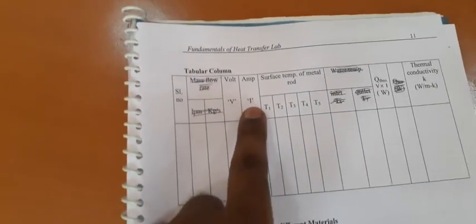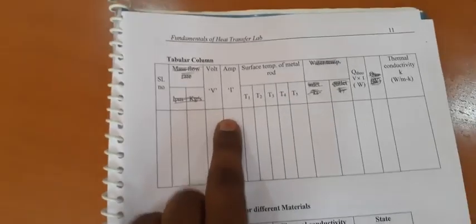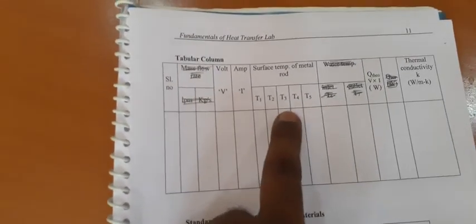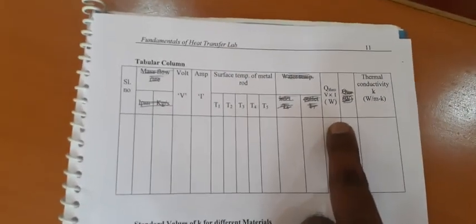In the tabular column, this is the voltage and current. Voltage is 60 in our case, current is 0.06. T1, T2, T3, T4, T5, the temperatures are noted. Now, Q is the heat, voltage into current.